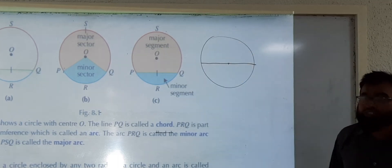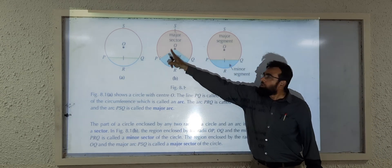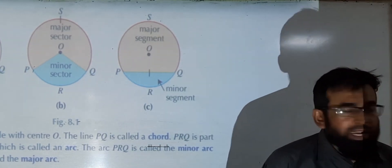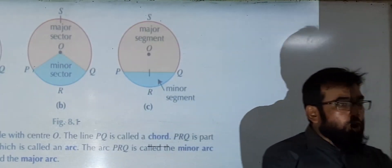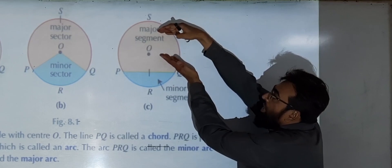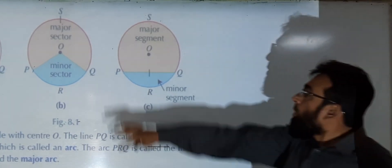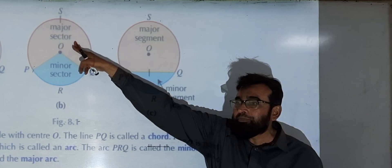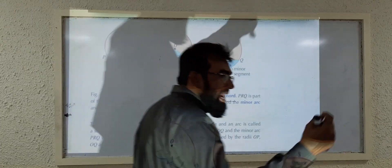PQ and OQ are the radii of the circle. The smaller region formed by two radii is called the minor sector, and the bigger region is called the major sector. In the same way, when two radii cut the circle, one part is the major sector and the other is the minor sector.